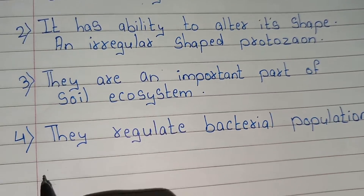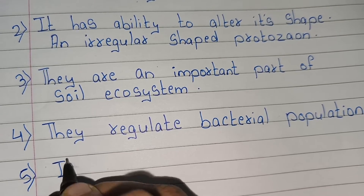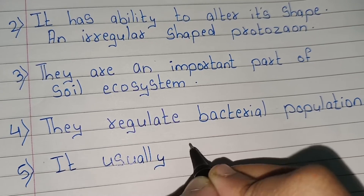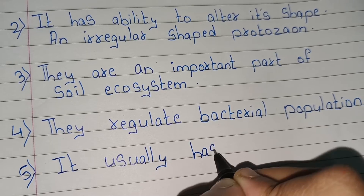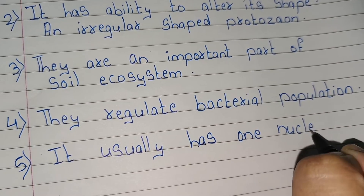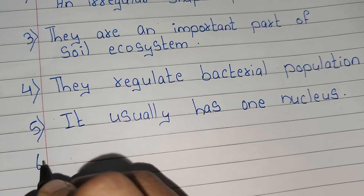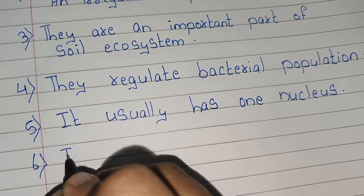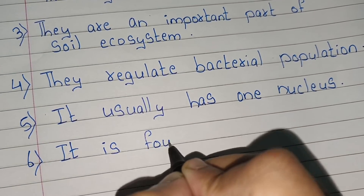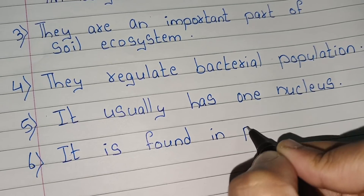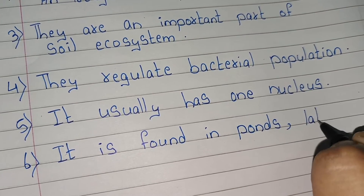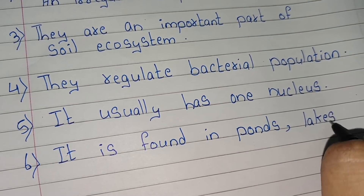Point number five, it usually has one nucleus. Six, it is found in ponds, lakes and river water.